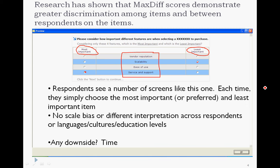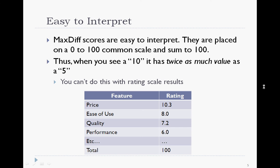We push a number of these screens to the respondent, and the number shown depends on the number of total items. This does a great job of discriminating between items. There's no scale bias. It's easy for different education levels, languages, and cultures. A criticism is that it takes more time to do than a simple grid question. But if you've got an important decision and you want valid, easy-to-interpret differences between the items, MaxDiff is really the way to go.